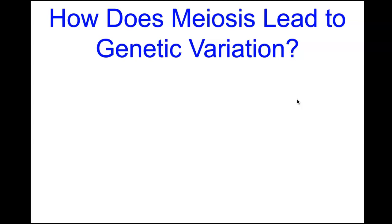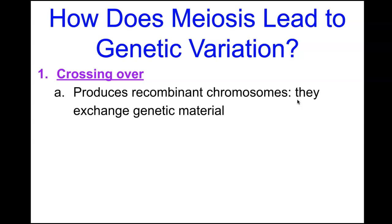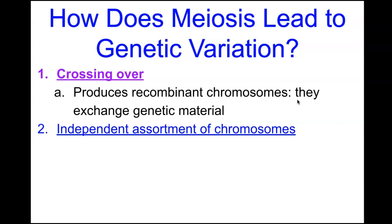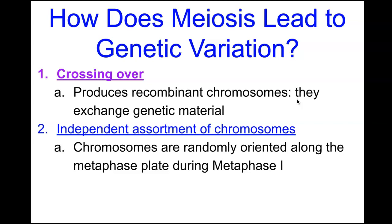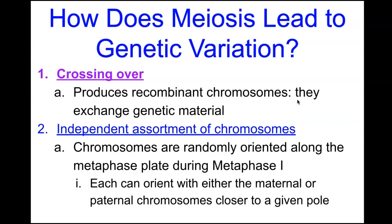How does meiosis lead to genetic variation? First, crossing over during prophase I produces recombinant chromosomes by exchanging genetic material. Second, independent assortment of chromosomes occurs when chromosomes are randomly oriented along the metaphase plate during metaphase I, and each can orient with the maternal or paternal chromosomes closer to a given pole.